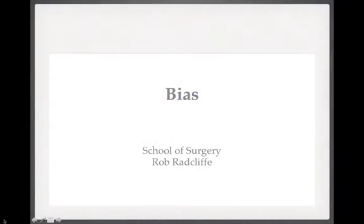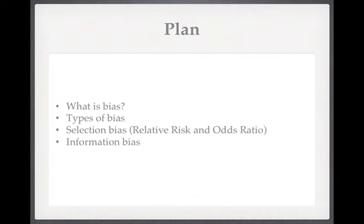Hi and welcome to our next podcast on medical statistics. Today we're going to talk about bias. We're going to start by talking about what bias is. We'll discover that there are loads and loads of types of bias and we're going to talk about just a couple of them. In talking about these two types of bias we'll also introduce the concept of relative risk and odds ratio, and then we will wrap up at the end.